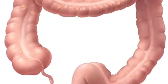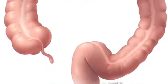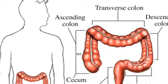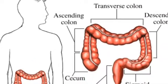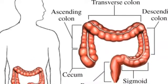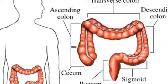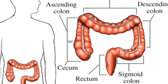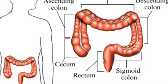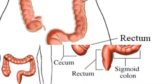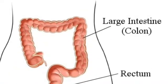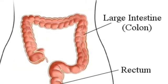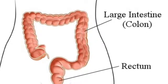The large intestine absorbs water and minerals. The cecum takes in digested liquid and passes it to the colon, which is the principal place for water absorption. The rectum collects waste. The large intestine reabsorbs most of the water we ingest and gives it back to the body.